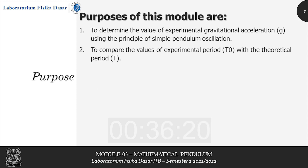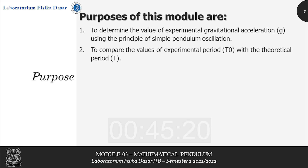The purposes of this module are: first, to determine the value of experimental gravitational acceleration, symbolized by g, using the principle of simple pendulum oscillation; and second, to compare the values of experimental period, symbolized by t0, with the theoretical period, symbolized by t.